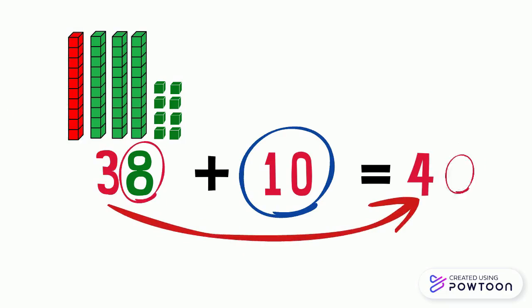And of course, the ones digit remains the same, which means we don't change the ones digit, which is 8. So, 38 plus 10 equals 48.